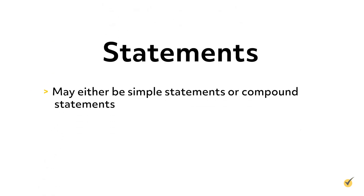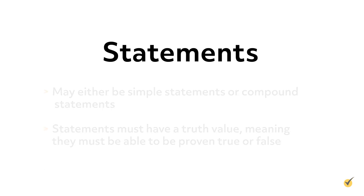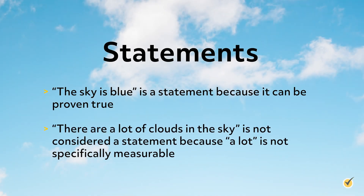The individual sentences which compose a proof are called statements. They may be either simple statements or compound statements. Statements must have a truth value, meaning they must be able to be proven true or false. For example, 'the sky is blue' is a statement because it can be proven true. 'There are a lot of clouds in the sky' is not considered a statement because 'a lot' is not specifically measurable — it cannot be proven true or false. Opinions are never considered statements in math.